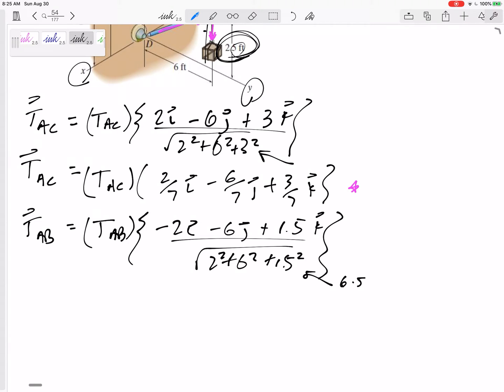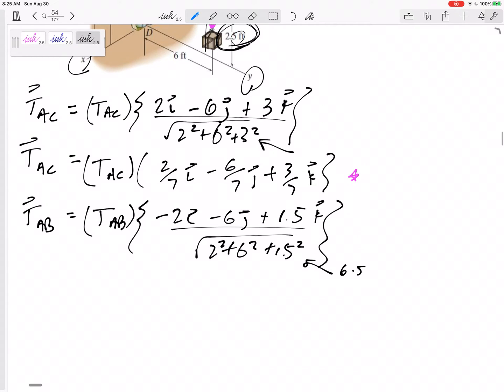You know, I would probably just write it to a few decimal places, but the one that I'm following here gives us fractions, not bad, of 4 thirteenths in the I, negative 12 thirteenths in the J, plus 3 thirteenths in the K.